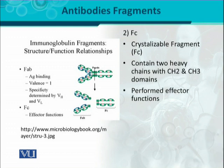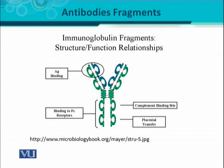The FC fragment performs effector functions, which are the secondary functions of immunoglobulins that affect the functions of immune cells. In the figure, the upper part shows the antigen binding site, where the heavy chain (green) and light chain (blue) play a role — this is included in the FAB fragment. On the other hand, the FC region on the lower side contains CH2 and CH3 domains of the heavy chain, and three functions are performed by the FC fragment.